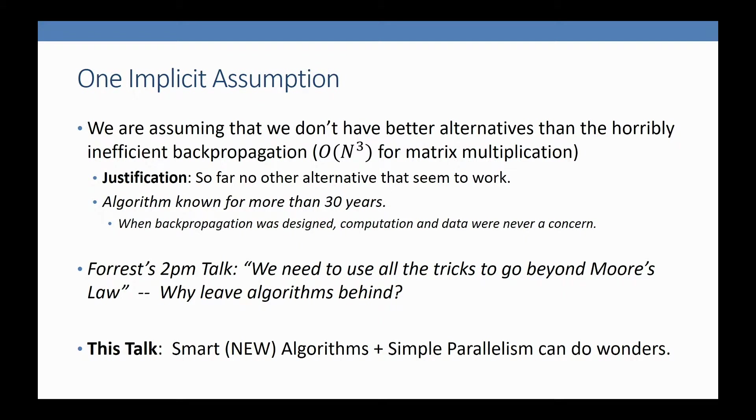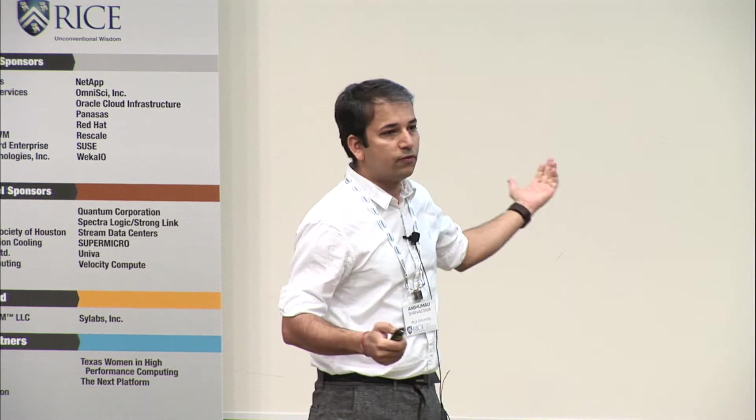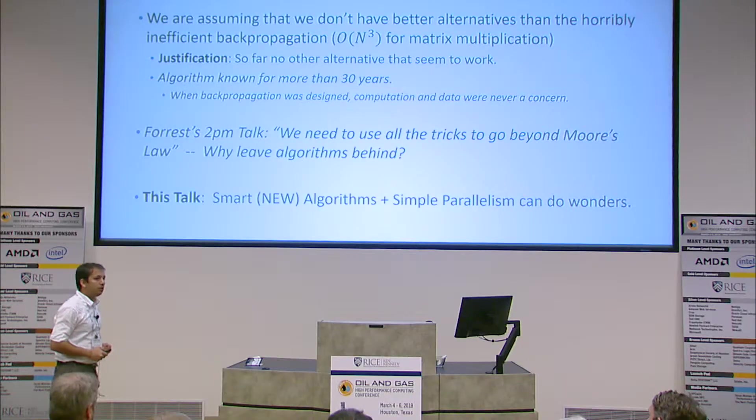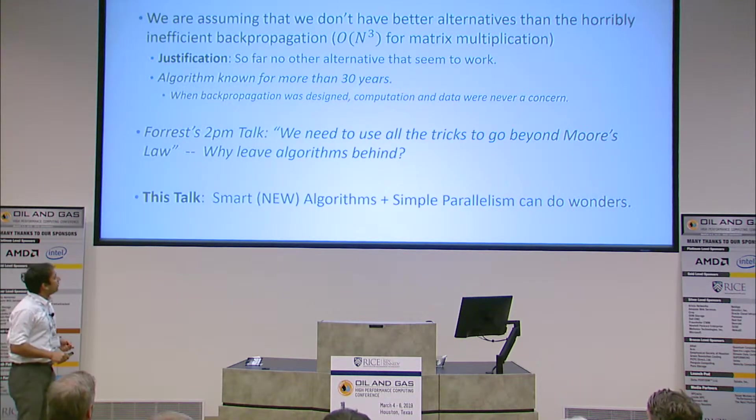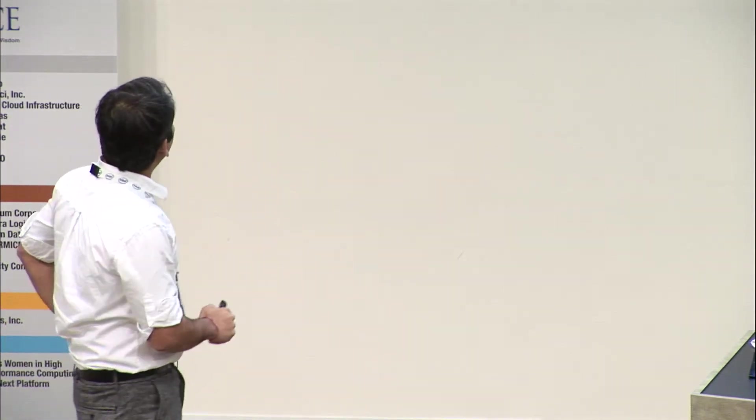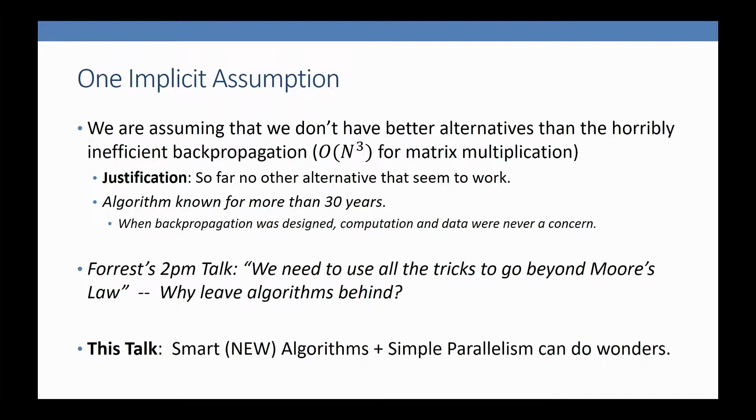But there's one assumption we're making: we don't have better alternatives than the horribly inefficient backpropagation. This is a 30-year-old algorithm, and we're still using it. When backpropagation was designed, computation and data were never a concern. One justification for still using it is we haven't seen a better reliable alternative. There was a talk around 2 p.m. that if we have to go beyond Moore's Law, we have to use all the tricks. Why not use algorithmic tricks?